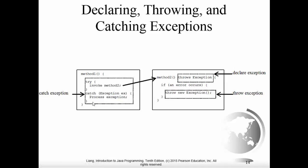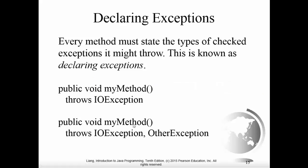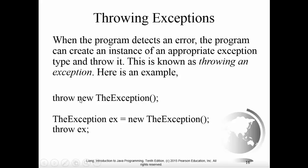Going back to our earlier example, we saw that we could throw an exception — it's kind of like a baseball game. Method two throws an exception that's caught by method one, which then does something with it. Maybe we've created a class that only accepts certain valid data, and someone passes something invalid — we throw an exception and say we're not going to take it, and the calling method catches it and decides what to do. Every method must state the types of checked exceptions it might throw using the throws keyword in the method declaration.